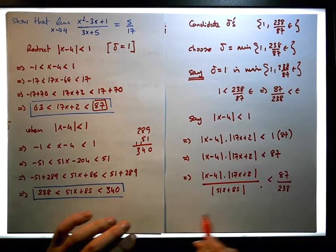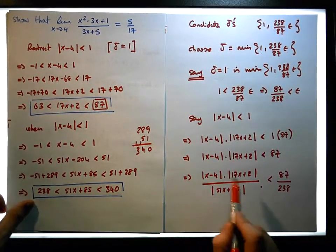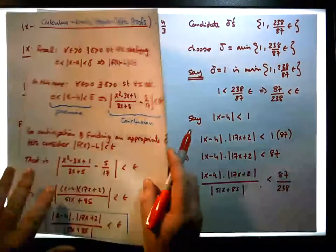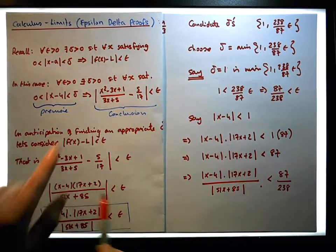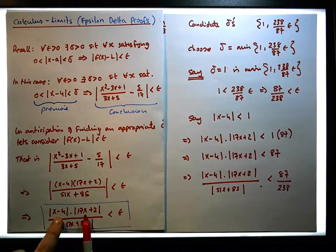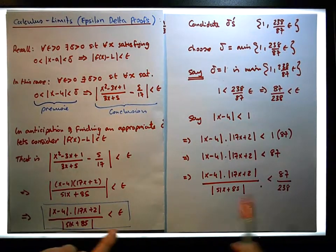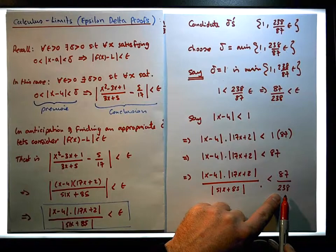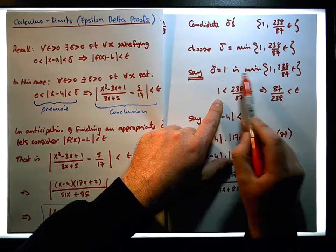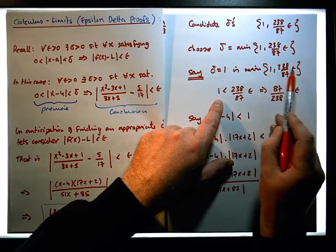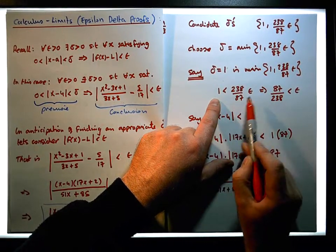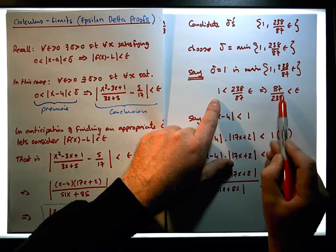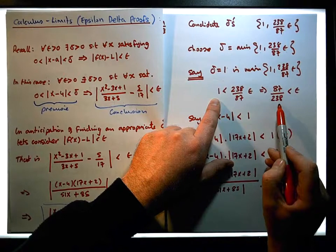So what we now know — and we're nearly there with our conclusion — is that this product divided by the absolute value is less than 87 over 248. And from our choice of delta being the minimum of these two values, this implies that 1 is less than 248 over 87 times epsilon, which implies that 87 over 248 is less than epsilon.